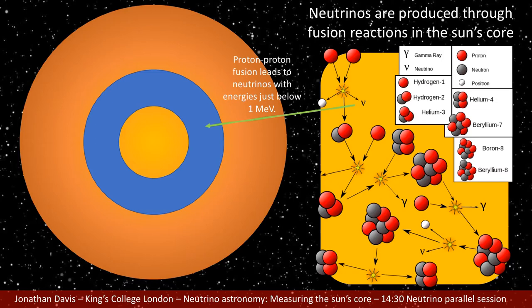Neutrinos are produced through the fusion of protons in the Sun's core. The lowest energy neutrinos are produced through the direct fusion of protons. These are called PP neutrinos and tend to be produced towards the outside of the Sun's core, based on our expectations from theory.